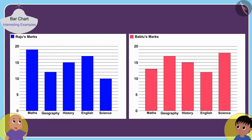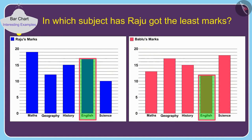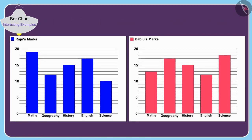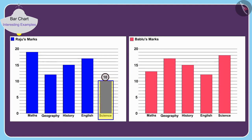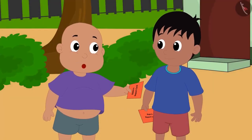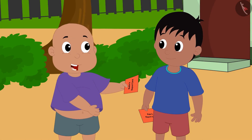Look Raju, your marks in this subject are the least among all the marks we both got. Can you tell in which subject Raju has got the least marks? The height of the rectangle made in science in Raju's bar chart is the smallest among all of the bars in Raju and Babalu's bar charts. Hence the lowest of all marks — 10 marks — are scored by Raju in science. Raju, I will help you in science from now on and you can help me in English. For now, let us go and enjoy our holidays.